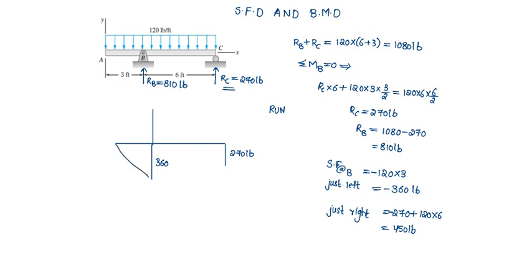The shear force at B just right is 450 pound upwards. Since UDL is acting, it should vary linearly — this is a 1st degree curve. The shear force diagram is negative at C, then positive just right of B, then negative again. This is the shear force diagram.